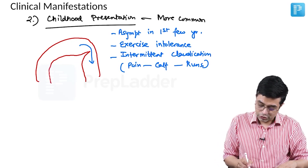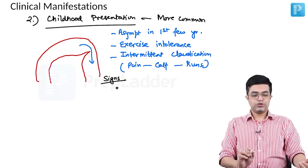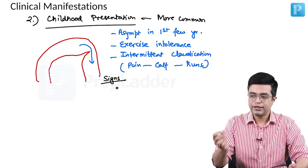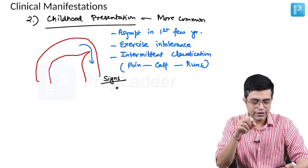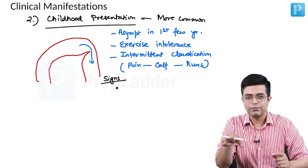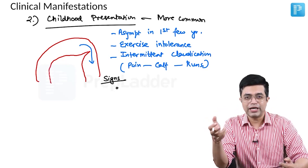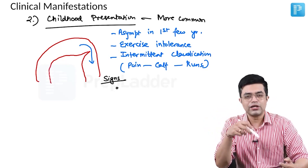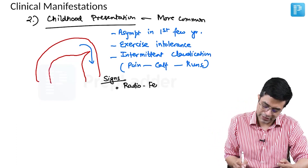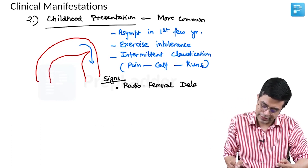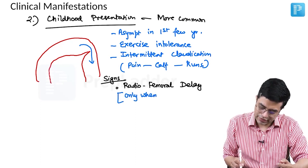On examination, if you check for radial and femoral pulses, normally the femoral pulse comes slightly earlier than the radial pulse. Here, the radial pulse will come first and the femoral pulse will be delayed. This is because femoral blood flow is maintained by multiple collaterals, and blood takes longer to reach the femoral artery. This sign is called radiofemoral delay — a common exam question — and it occurs only once collaterals have developed.